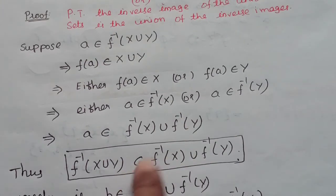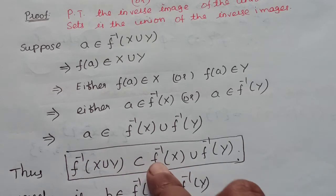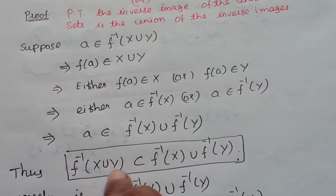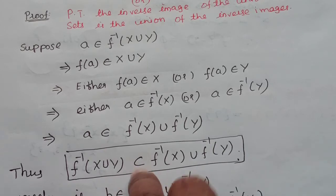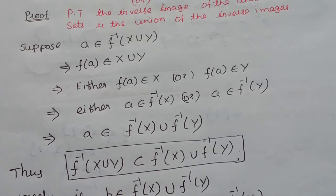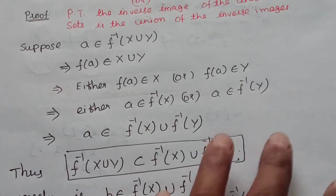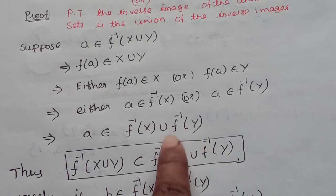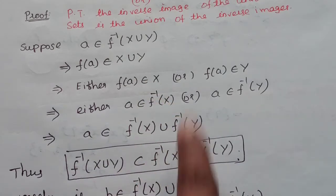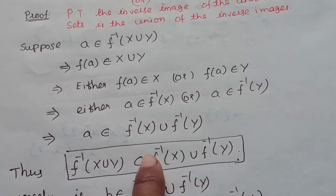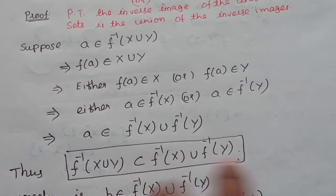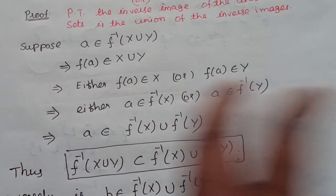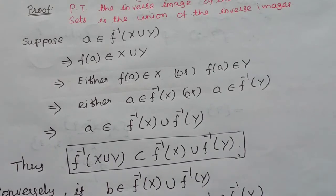So f inverse of X union Y is a subset of f inverse of X union f inverse of Y. If you follow the textbook notation, this means contained in. Now we can prove the other direction. We will work on f inverse of X union f inverse of Y.